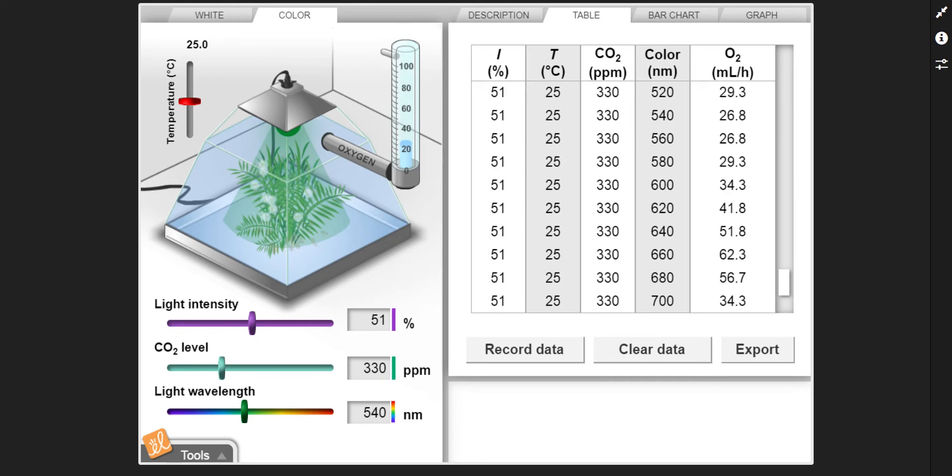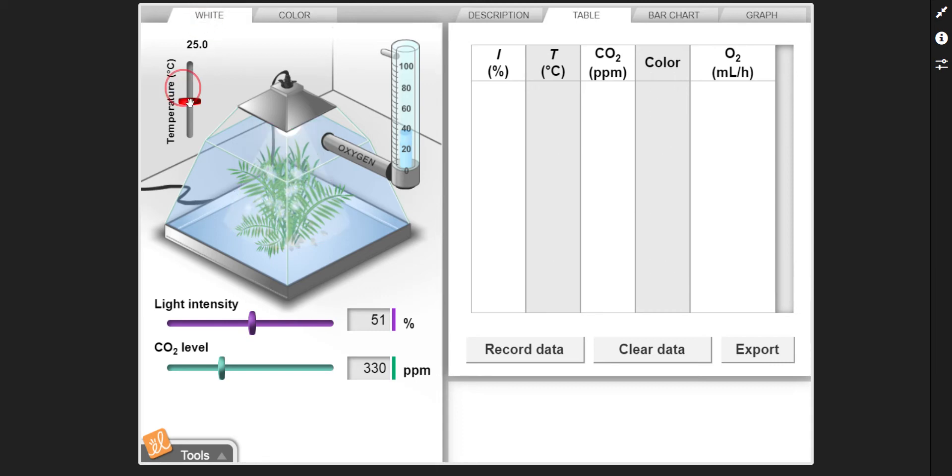So let's take a look now at activity C. Activity C is asking us about limiting factors. So what they're asking, go back to white light, plain old generic, non-visible light.